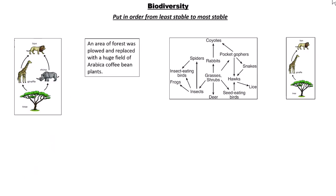Starting: put these in order from least stable to most stable. You could pause the video, try things out on your own, and see how well you do. Least stable would be number one — an area of forest plowed and replaced by a field of just one type of plant, the arabica coffee bean. Only one specific organism, no biodiversity. If one dies, they all die.